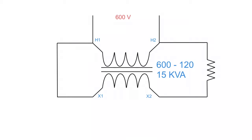In this video we're going to be going over buck boost auto transformers. An auto transformer is a transformer that shares a common winding. The difference between this type and a typical auto transformer is that here we're using a standard dual winding transformer, with the H winding on one side and the X winding on the other. We've taken a jumper and connected H1 to X1, then connected a load from X2 to H2, turning a dual winding transformer into an auto transformer through a shared electrical connection.